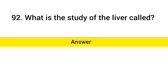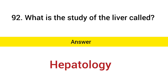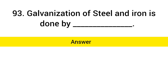What is the study of the lever called? Answer: Apertology. Galvanization of steel and iron is done by? Answer: Zinc.